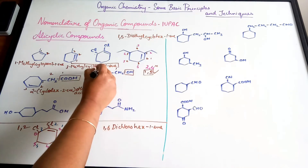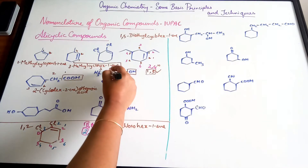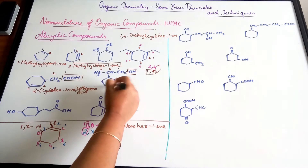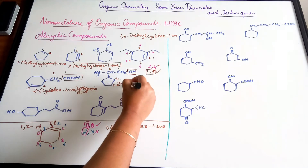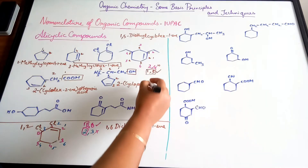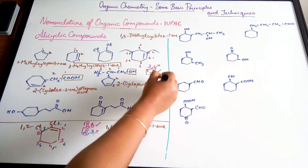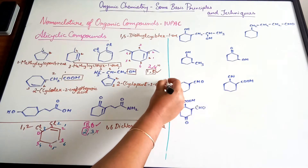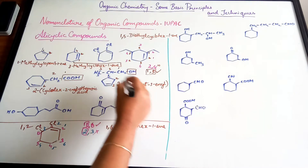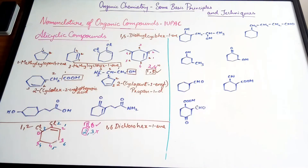Similarly, when we have an alcohol, the chain is three carbon atoms long. Since alcohol is the principal functional group it gets the lowest number. At the third position we have the ring, and since we're counting from the carbon joined to the ring, that gives a cyclopent-3-en-1-yl substituent. Since it is part of the substituent, 'ene' is written as 'enyl'. The compound is (cyclopent-3-en-1-yl)propan-1-ol.